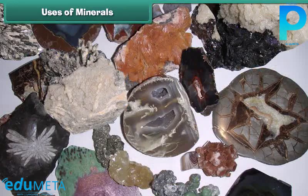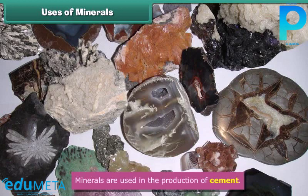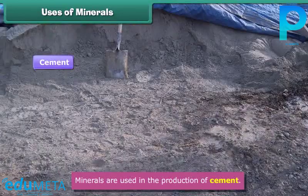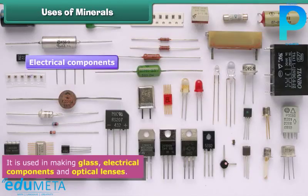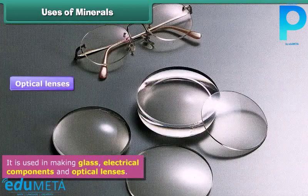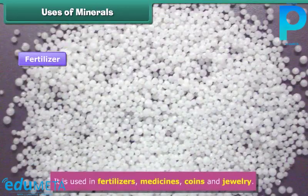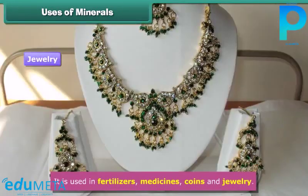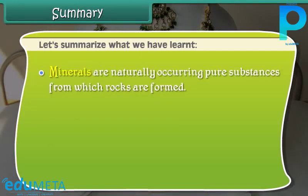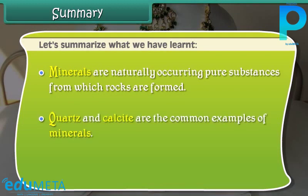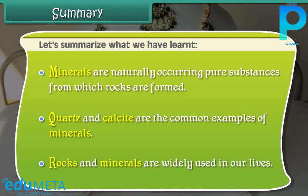Uses of minerals: Minerals play an important role in our lives. Minerals are used in the production of cement. They are used in making glass, electrical components, and optical lenses. These are also used in fertilizers, medicines, coins, and jewelry. Minerals are naturally occurring pure substances from which rocks are formed. Quartz and calcite are the common examples of minerals. Rocks and minerals are widely used in our lives.